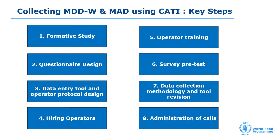We will now discuss the key steps necessary to collect MADD and MDDW indicators using CATI, Computer Assisted Telephone Interviewing. As a first step, we highly recommend undertaking a formative study using qualitative research methods to assess the feasibility of contacting women remotely via mobile phones. Once you've determined the feasibility of the project, the remaining steps 2 to 8, from questionnaire design to administration of calls, should be followed. You've already learnt about steps 2 to 8 in other modules, so we'll only look at step 1 in greater detail. For further information on steps 2 to 8, you can refer to the CATI guidance document in the resource section to collect MADD and MDDW.